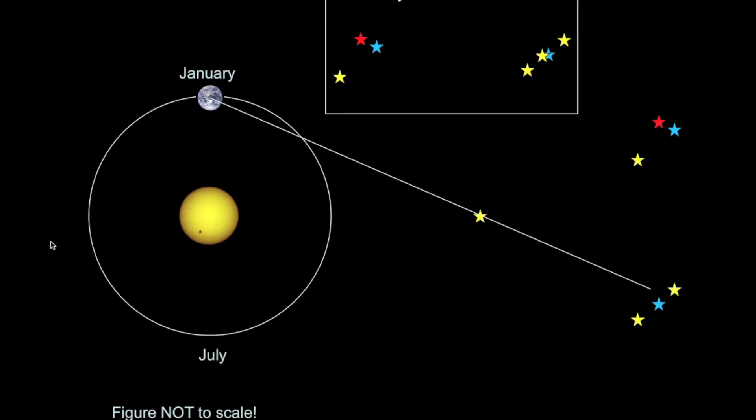What if we go to another part of the year? In July, we'll have a completely different vantage point and so in July, from the Earth, if we look towards the nearby star, it will not appear to be in front of the grouping of the two yellow and blue stars.